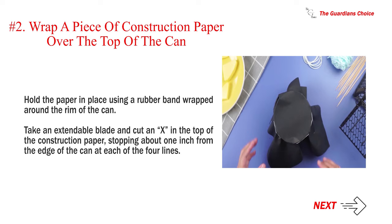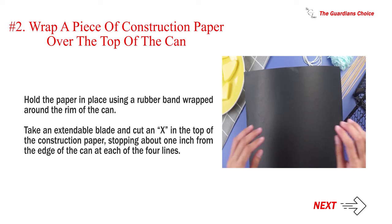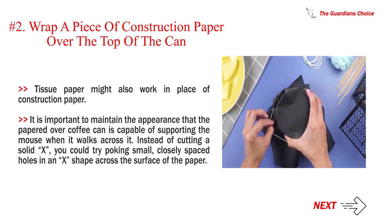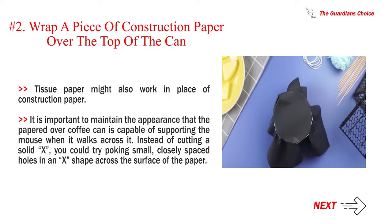Number 2: Wrap a piece of construction paper over the top of the can. Hold the paper in place using a rubber band wrapped around the rim of the can. Take an extendable blade and cut an X in the top of the construction paper, stopping about 1 inch from the edge of the can at each of the 4 lines. Tissue paper might also work in place of construction paper. It is important to maintain the appearance that the papered-over coffee can is capable of supporting the mouse when it walks across it. Instead of cutting a solid X, you could try poking small, closely spaced holes in an X shape across the surface of the paper.